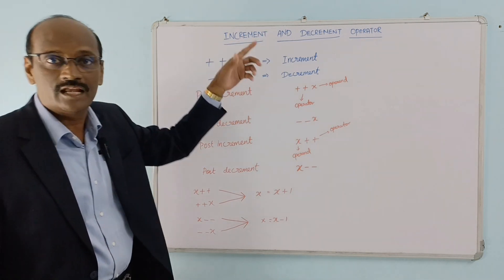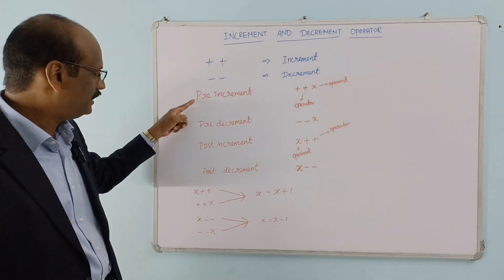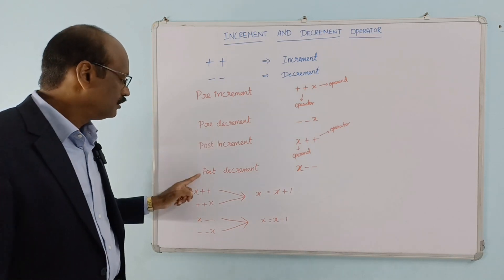Increment and decrement operators have four categories: pre-increment, post-increment, pre-decrement, and post-decrement.